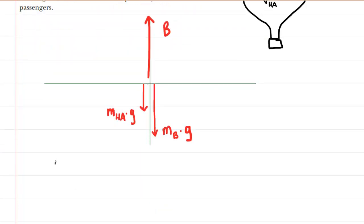Now we know that because the hot air balloon is in equilibrium, the sum of the forces acting in the y direction would equal zero. Notice that because the buoyant force is upward, that force will be positive, and the two gravitational forces, because they point downward, will both be negative. So we can write B minus m_ha g minus m_b g equals zero.